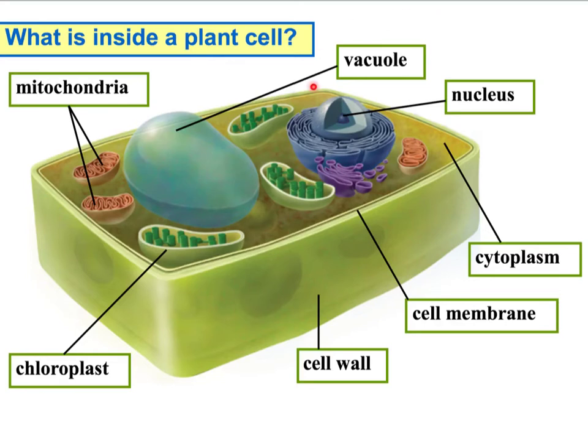Notice the vacuole in the plant cell — it's different. It's really large, there's only one, and it's in the center. Plants store excess water to provide extra support, and the water in the vacuole keeps the plant from drying out. Plants need a lot more water because they can't go out and get food like we can. That's why they have one large central vacuole compared to animal cells' multiple small vacuoles or no vacuoles.